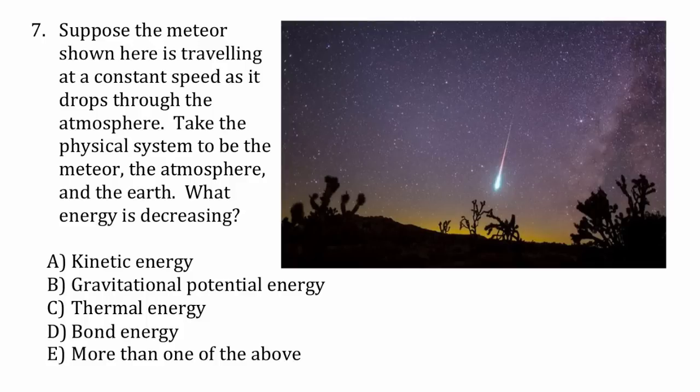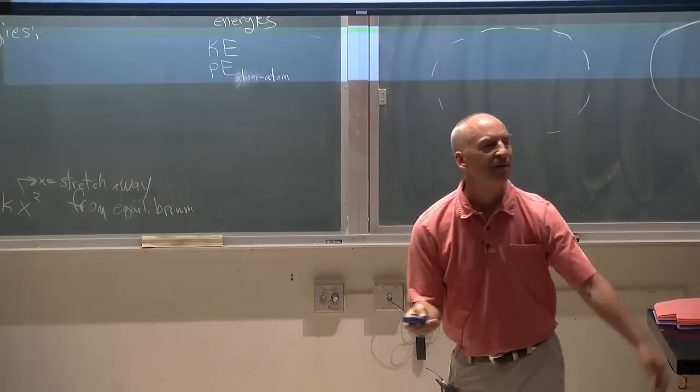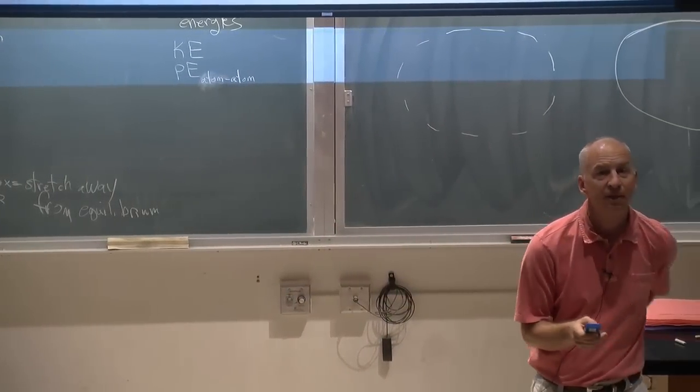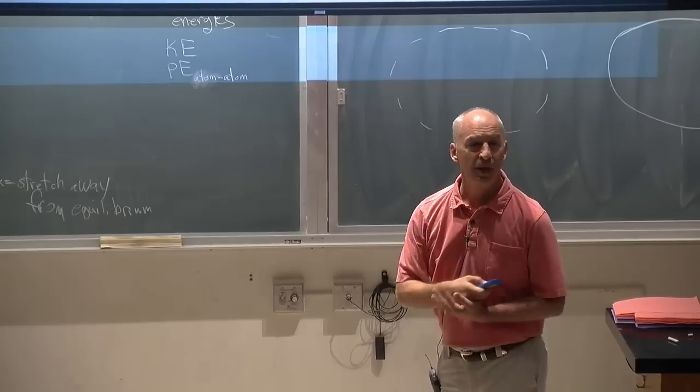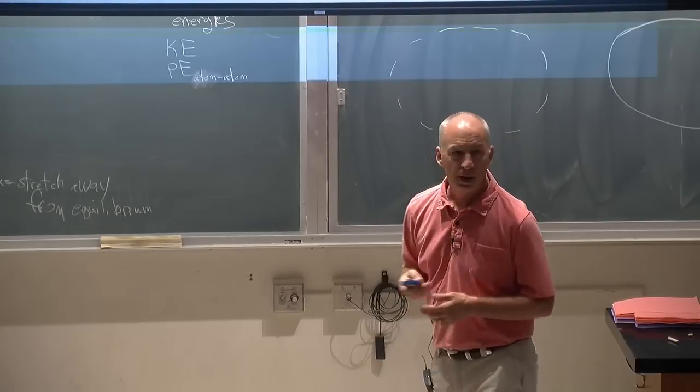Suppose the meteor shown here is traveling at a constant speed as it drops through the atmosphere. You've probably seen pictures like this, so you know that the meteor was up there and it comes down through the atmosphere. Suppose we take the physical system - I'm going to identify one for you: the meteor, the atmosphere, and the earth.